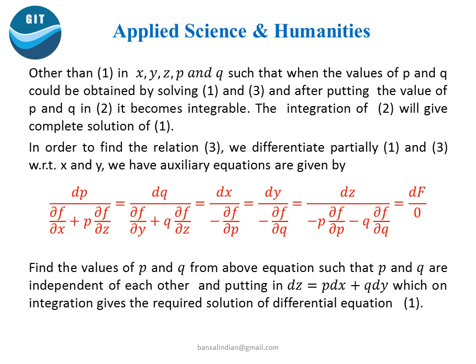In order to get the relation (3), we differentiate partially equations (1) and (3) with respect to x and y. We get an auxiliary equation of the form: dp / (∂f/∂x + p·∂f/∂z) = dq / (∂f/∂y + q·∂f/∂z) = dx / (−∂f/∂p) = dy / (−∂f/∂q) = dz / (−p·∂f/∂p − q·∂f/∂q).